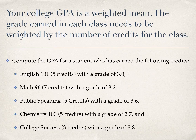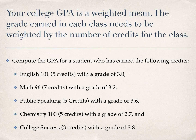One final example: your college GPA is a weighted mean, where the grade earned in each class needs to be weighed by the number of credits for that class. Compute the GPA for a student who earned: a 3.0 in English 101 (5 credits), a 3.2 in Math 96 (7 credits), and a 3.6 in Public Speaking (5 credits). Because different courses have different numbers of credits, each grade point should be weighed differently.